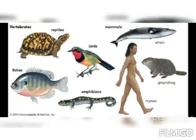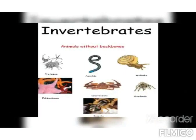Some animals are vertebrates, whereas others are invertebrates. Vertebrates means they have a vertebral column, or backbone — for example fish, birds, reptiles, amphibians. Invertebrates means they do not have a vertebral column or backbone — for example insects, protozoa, etc.